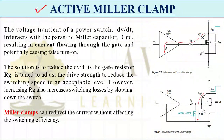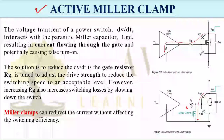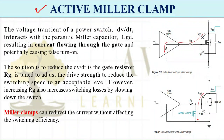That is why there is a need for the active miller clamp circuit. The miller clamp is a type of active switch that clamps the voltage and protects the device from the induced current. The voltage transient dv/dt of the power switch interacts with the parasitic miller capacitance Cgd, resulting in current flowing through the gate and potentially causing a false turn-on. The current path flows through Cgd, through Rg, and into the gate driver IC.